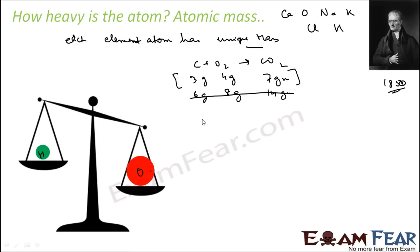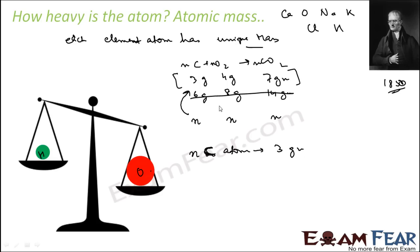This is a balanced reaction. In this reaction, N carbon molecules will react with N oxygen molecules to give N molecules of CO2. So N carbon atoms weigh 3g and N oxygen atoms weigh 4g. Since the same number of carbon atoms is 3g and the same number of oxygen atoms is 4g, oxygen is heavier.